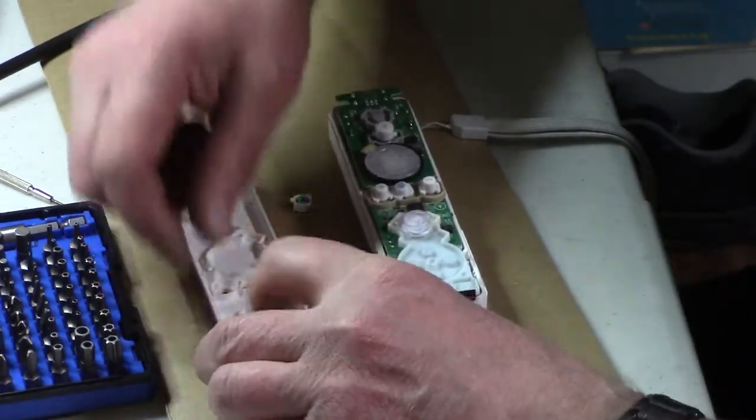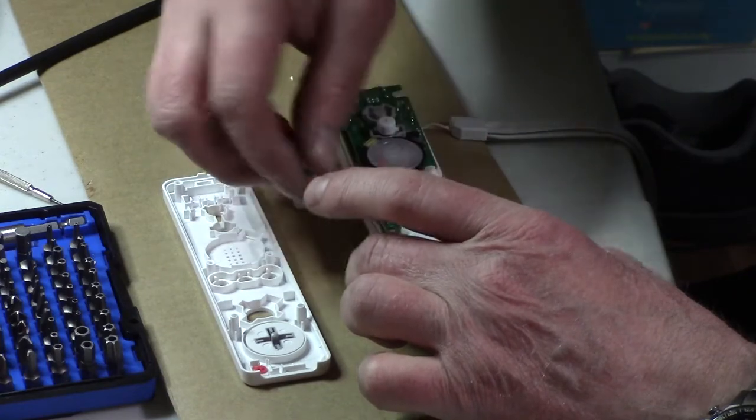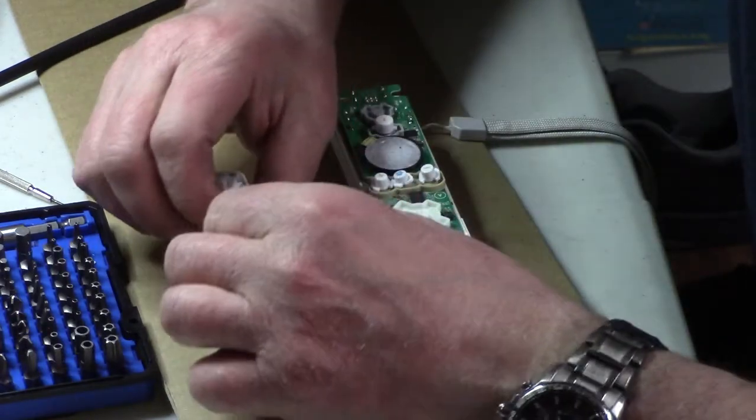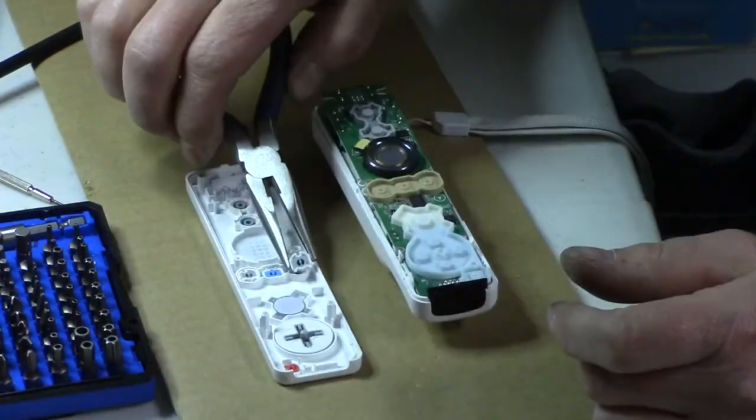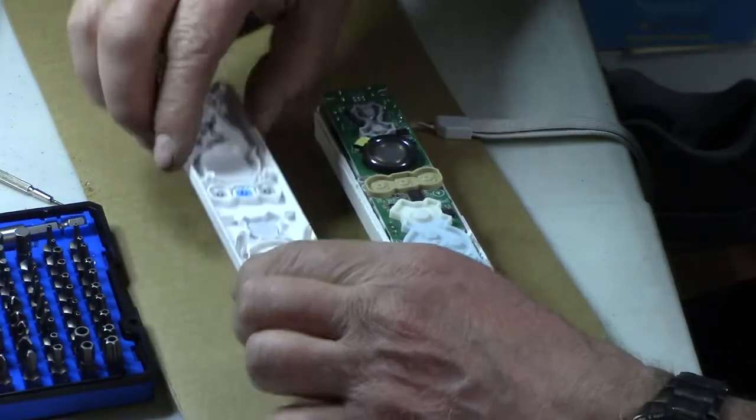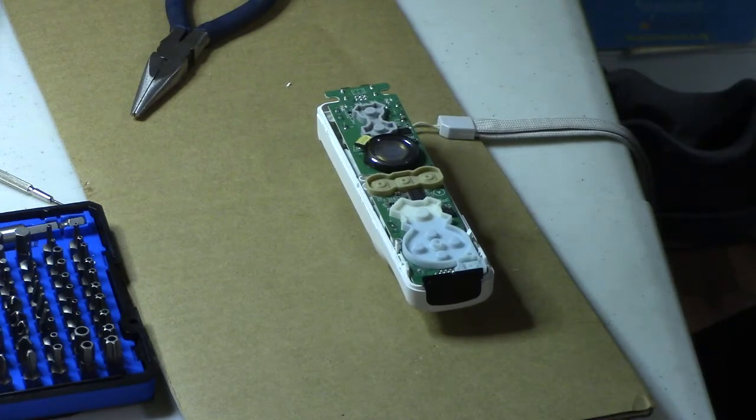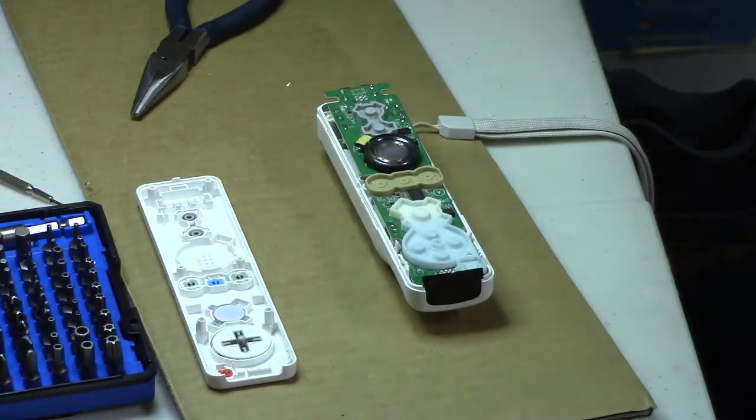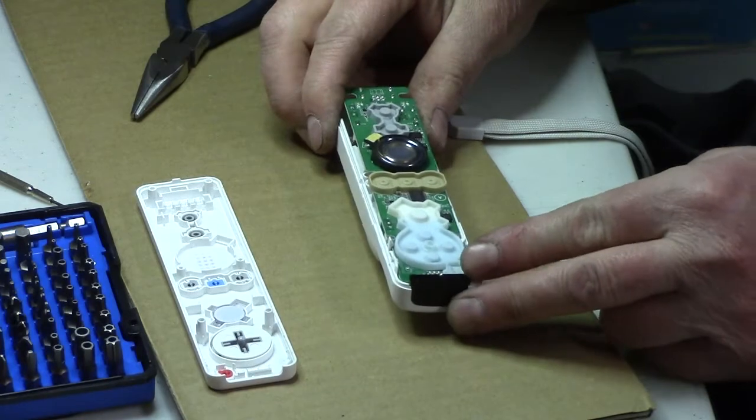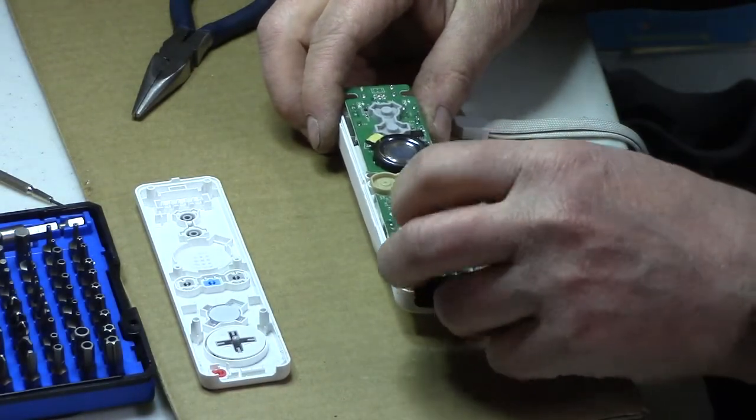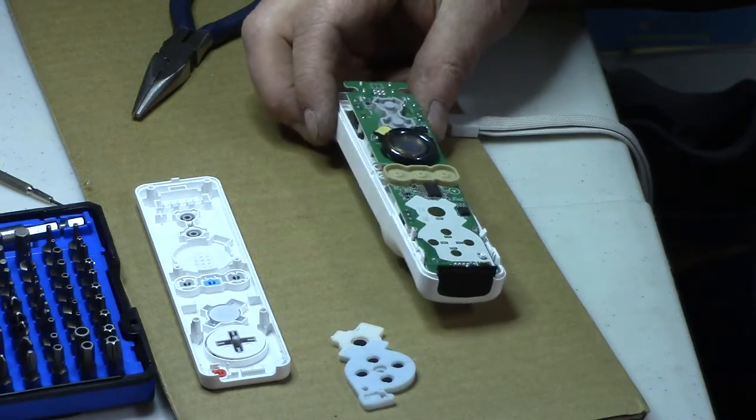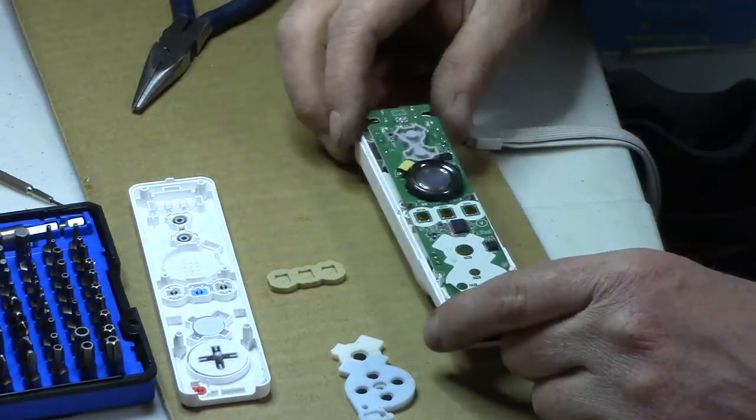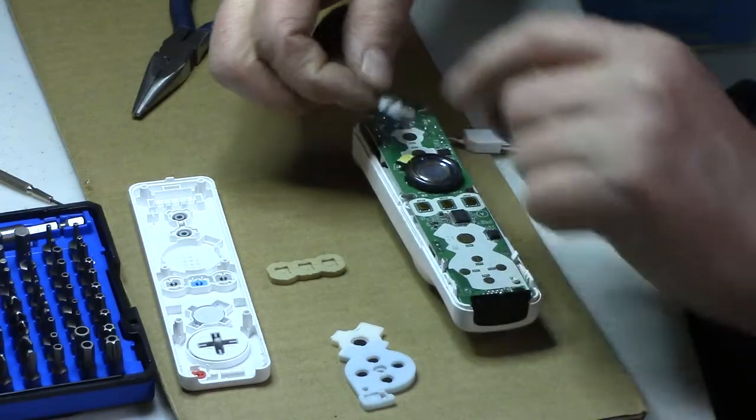That goes there. A button, what would be wrong with the A button? I'll just look at it upside down. Yeah, everything looks normal. Okay, so does this come off? Yes it does. Does that come off? Yes it does. And does this come off? Yes it does.